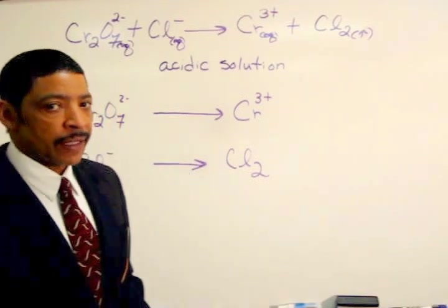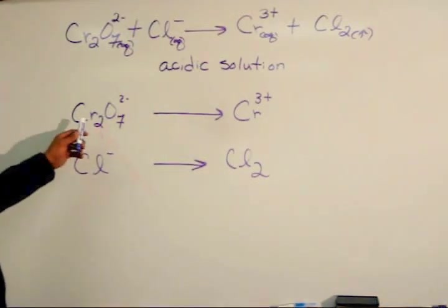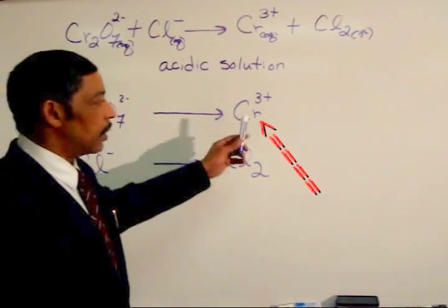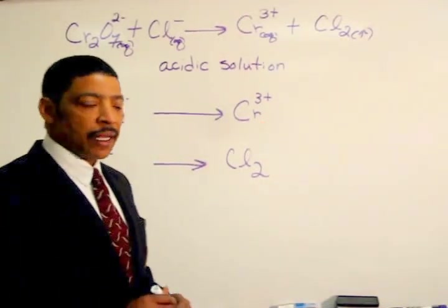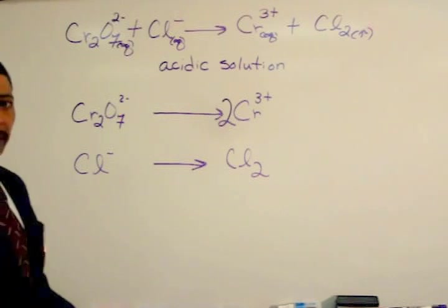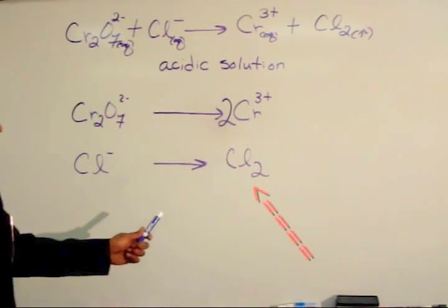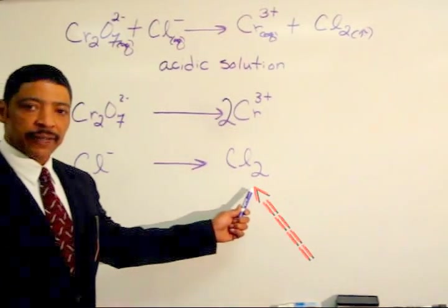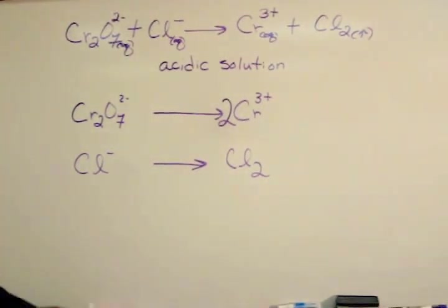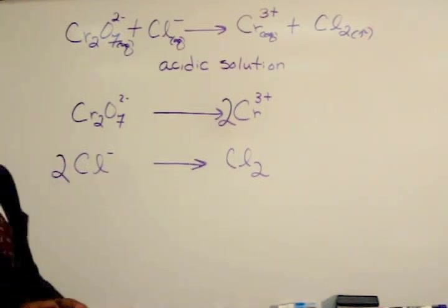The next step is to balance the mass in each half reaction. In the first half reaction, there are two chromium ions on the left side and one chromium three-plus ion on the right side. Therefore, to balance the chromium, I will place a two in front of the chromium three-plus ion. In the second half reaction, there are two chlorines on the right side and one chloride ion on the left side, so I will place a two in front of the chloride ion.